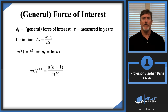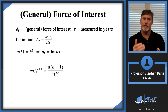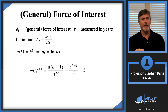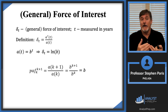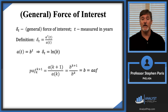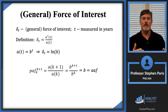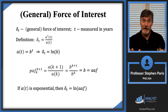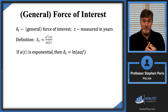If you plug in k+1 for t and k for t, the periodic accumulation factor from k to k+1 is the ratio of b^(k+1) to b^k. The b^k terms cancel and you're left with just b. Since the period is one year, b is actually the annual accumulation factor. So if the accumulation function is exponential, the force of interest is the natural log of the annual accumulation factor.